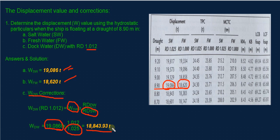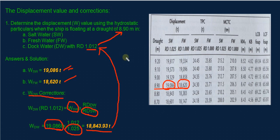This is the displacement of the ship when floating in dock water at a draft of 8.90 meters. I hope you learned something, guys. Thank you for watching.